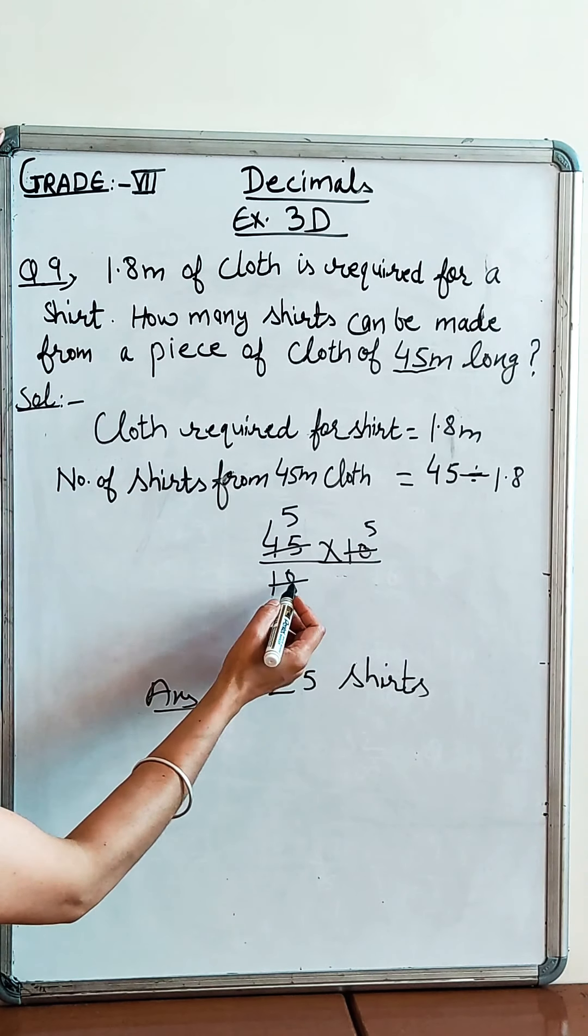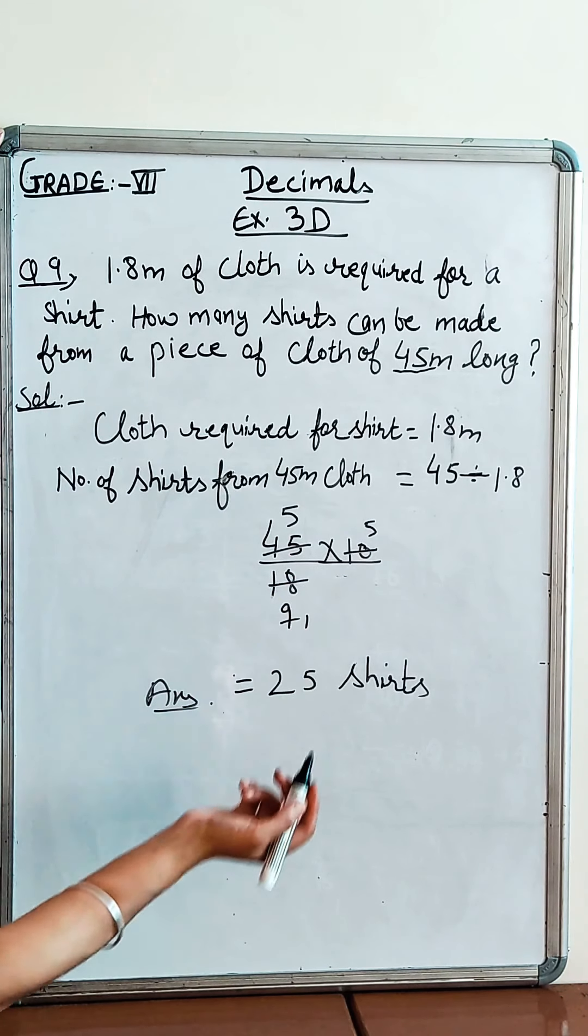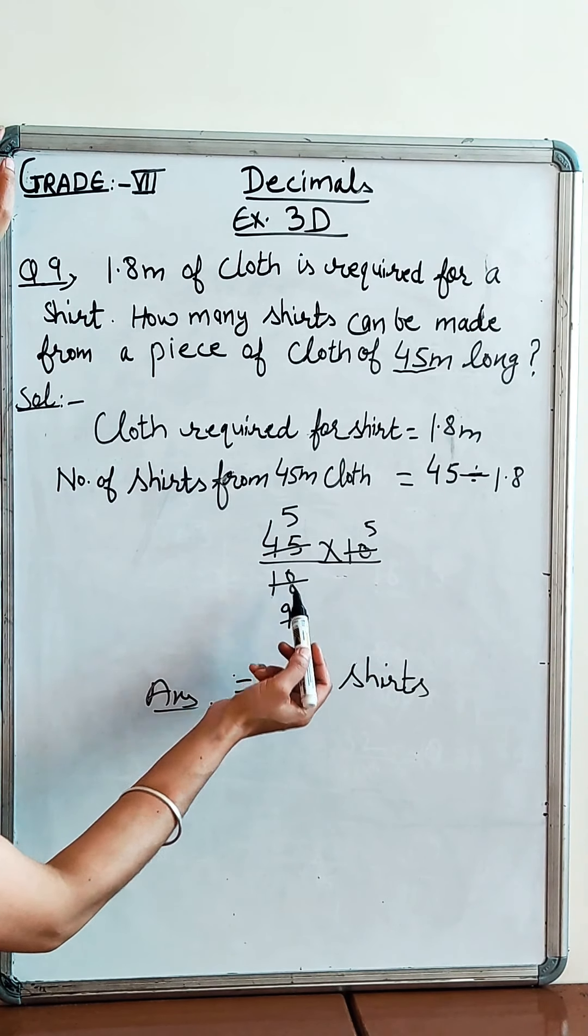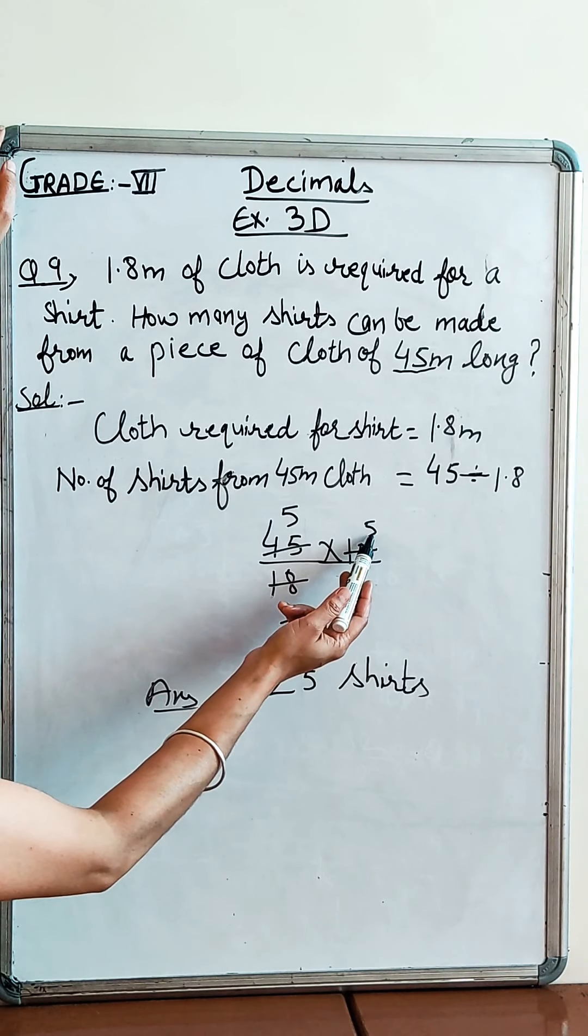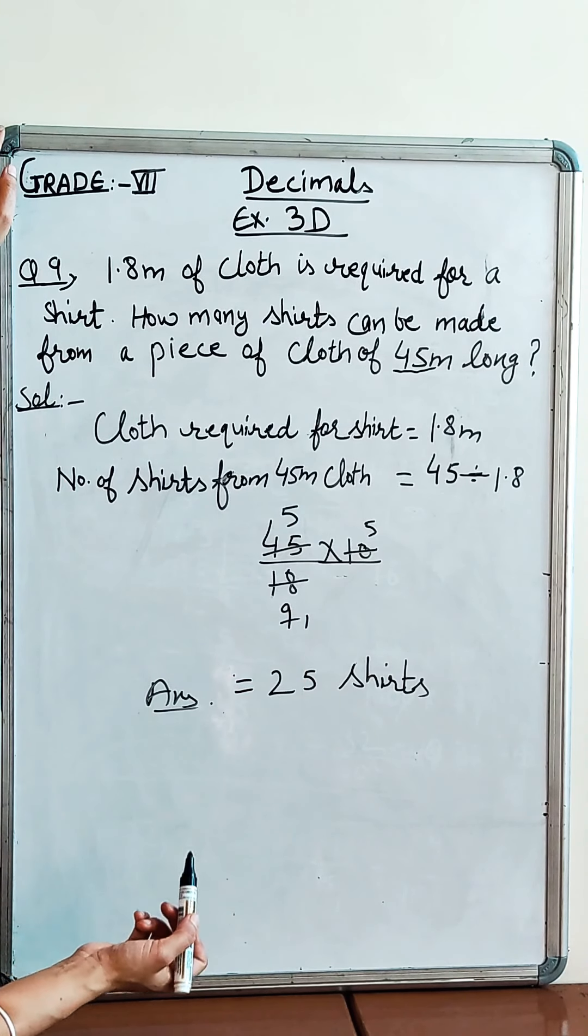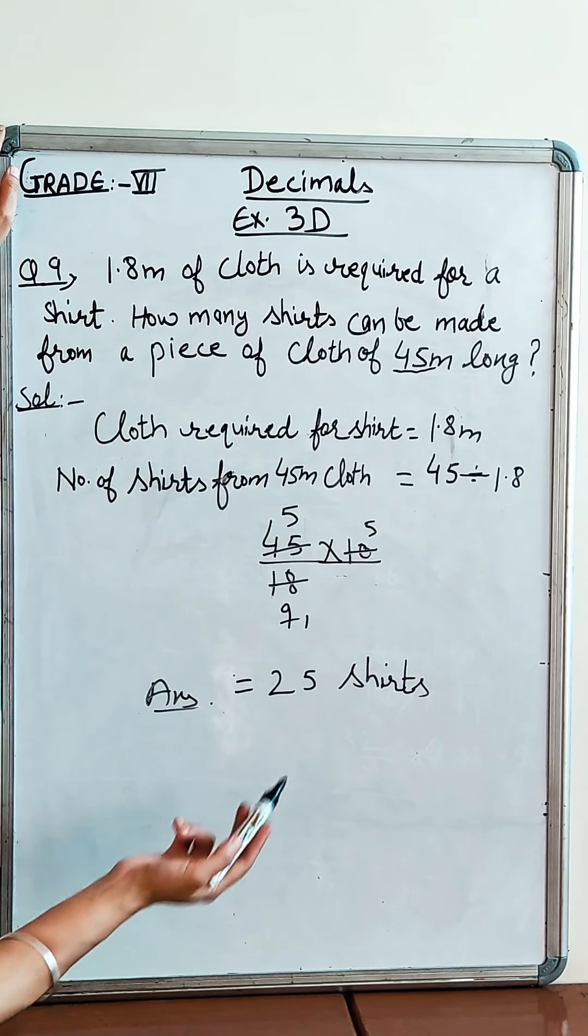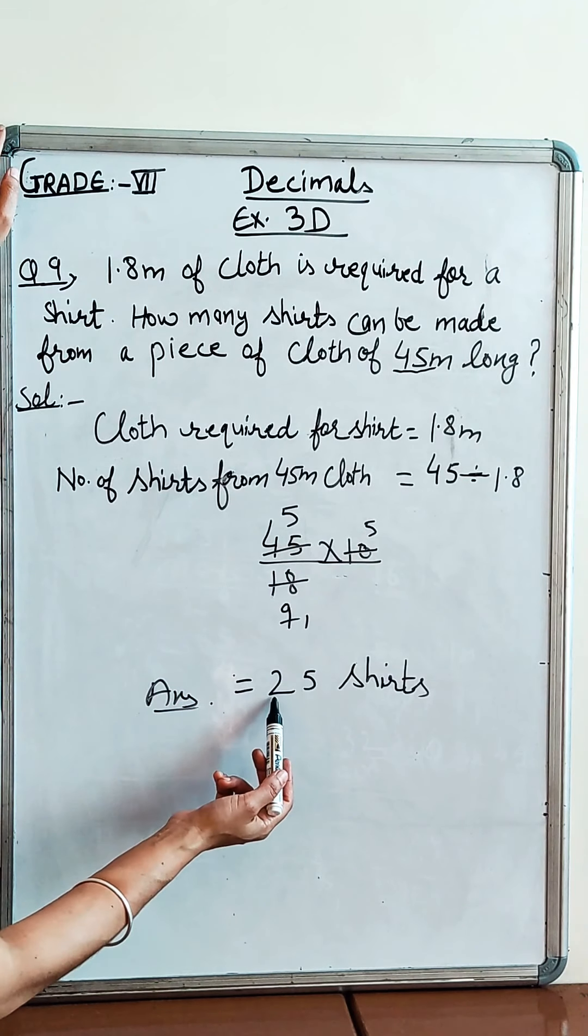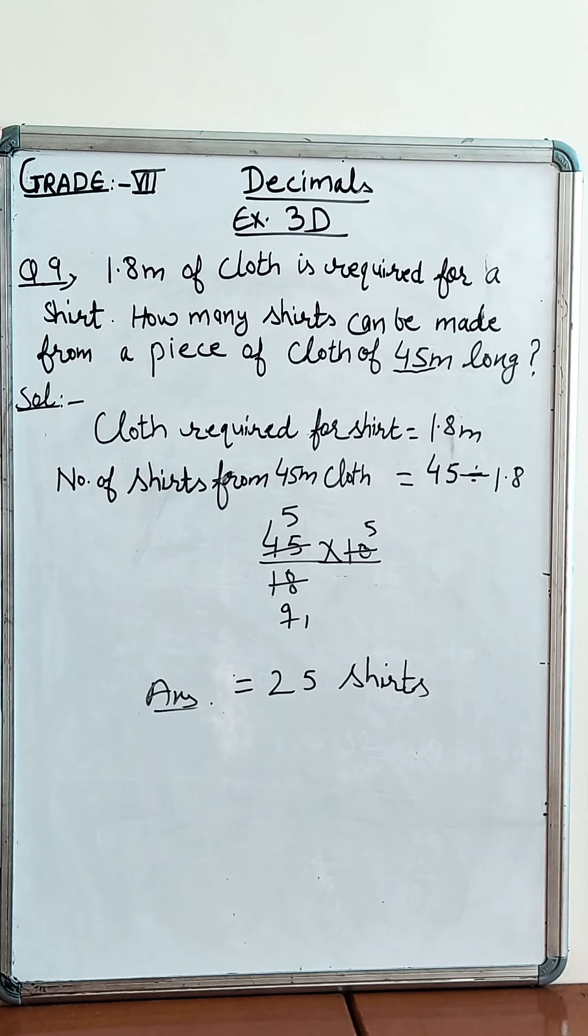Now what does the same mean? You have divided here and you have a decimal. So you will have 18 over 10, reciprocal is 10 over 18. Similarly, this 10 and 18 is cut together - 2 divided by 2. 2 fives are 10 and 2 nines are 18. And 9 and 45 are cut - 9 ones are 9, 9 fives are 45. So 5 and 5 remain on both sides. So 25, 5 fives are 25 shirts can be made from 45 meter cloth. This is the answer.